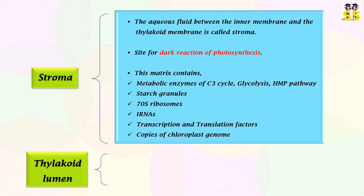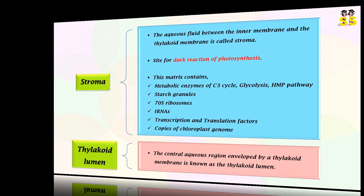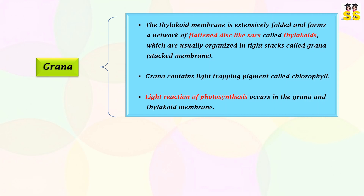Thylakoid lumen is the central aqueous region that is enveloped by the thylakoid membrane. Grana: the thylakoid membrane is extensively folded and characterized by the presence of flattened disc-like sacs called thylakoids, which are frequently organized in tight stacks called grana. Grana contain chlorophyll pigment, responsible for the light reaction of photosynthesis.